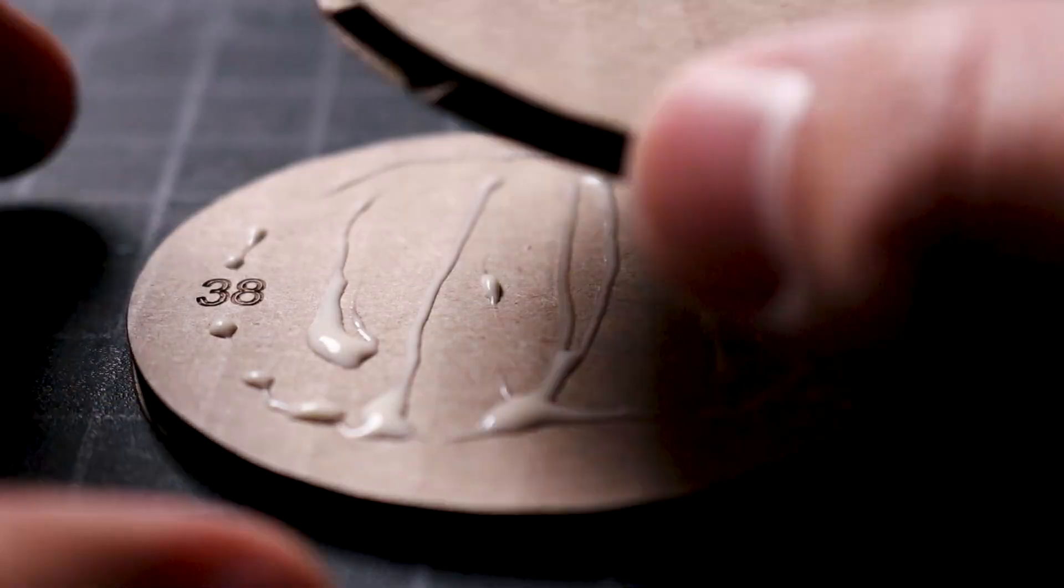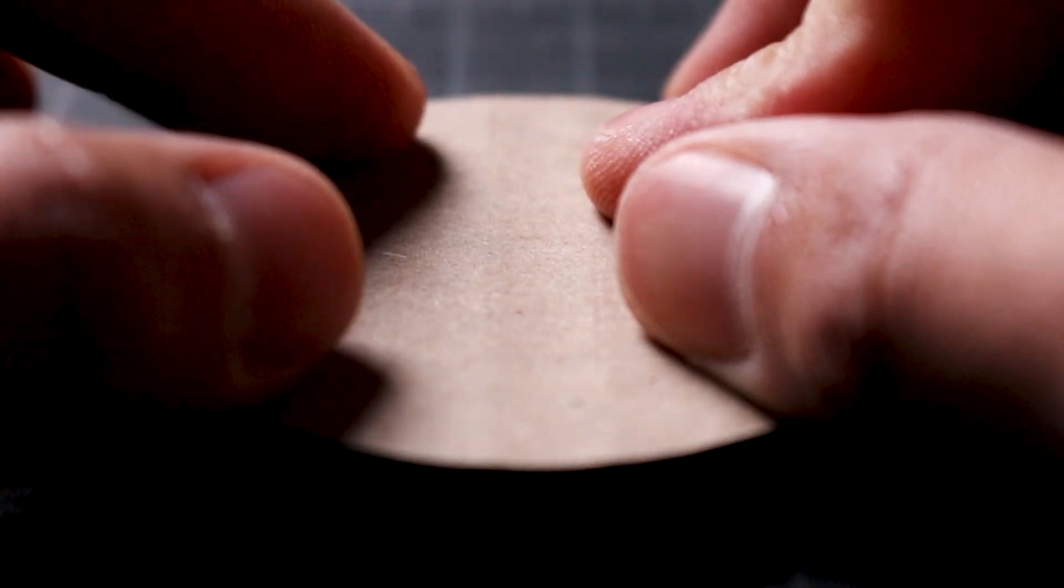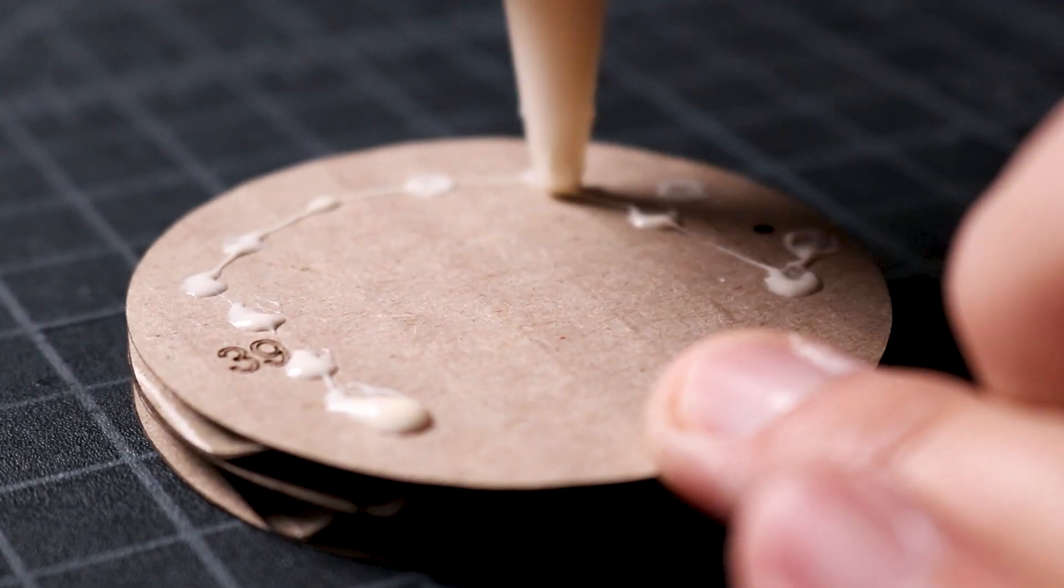Now, I turn over the following piece so that the number faces up, roughly align the numbers with the one below, and press down to glue the pieces together. I repeat this with all the pieces without the center cutout.